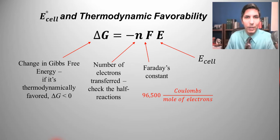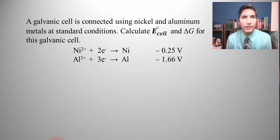Well, let's do an example. Let's try this example. We have a galvanic cell that's connected using nickel and aluminum metals at standard conditions. Calculate E cell and delta G for this galvanic cell. So we have the two reduction half reactions written along with their corresponding potentials. Our job is first of all to find E cell.